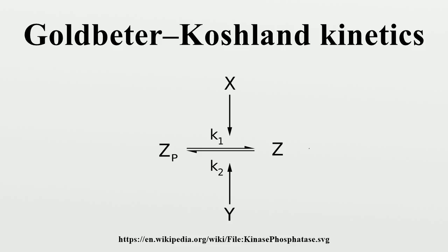It has many applications in the description of biological systems. The Goldbeter-Koshland kinetics is described by the Goldbeter-Koshland function. Graphically, the function takes values between 0 and 1 and has a sigmoid behavior. The smaller the parameters J1 and J2, the steeper the function gets and the more switch-like behavior is observed.